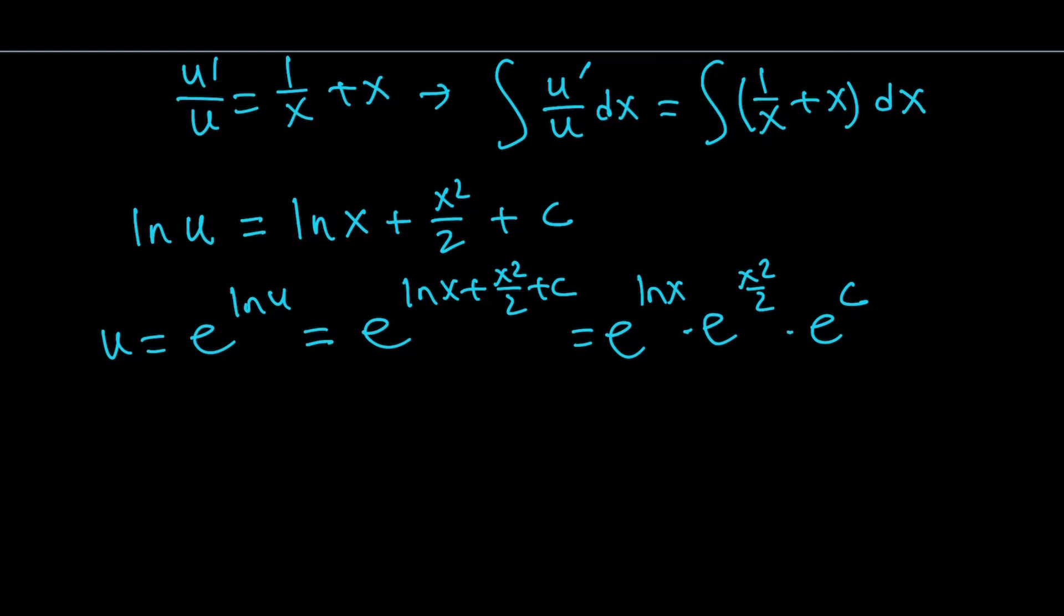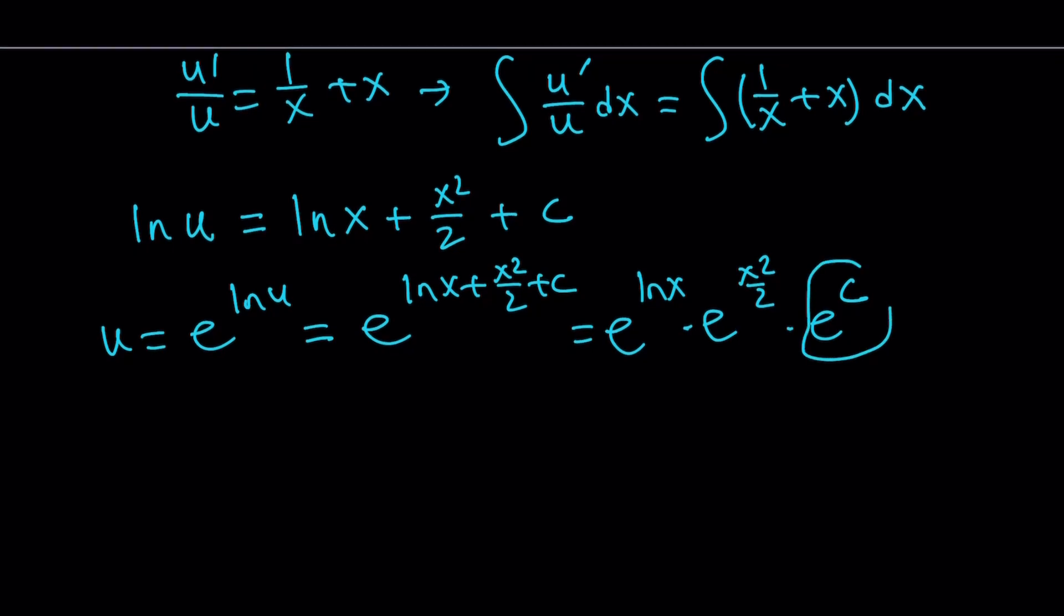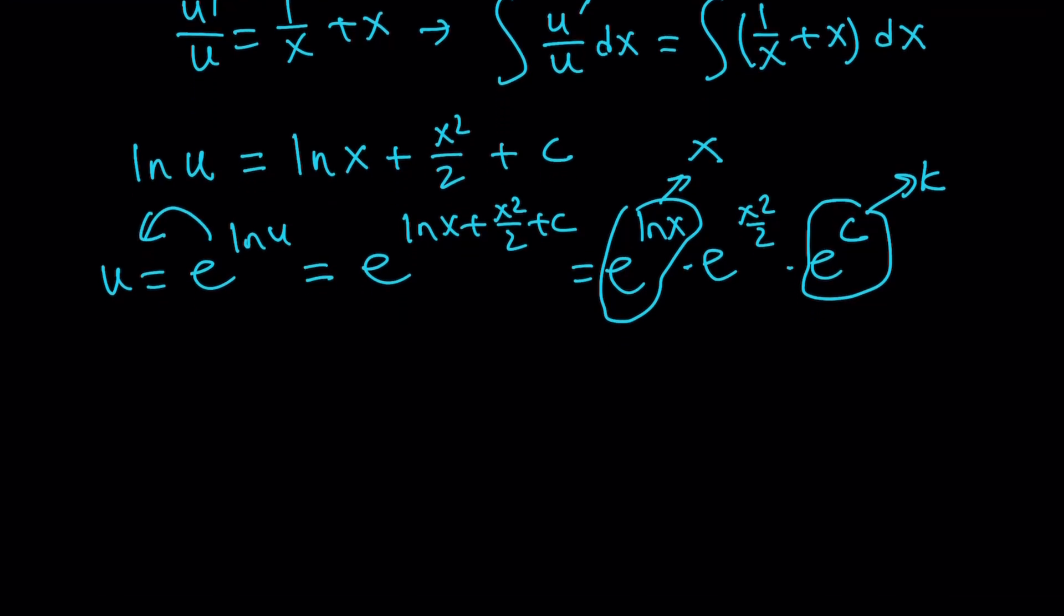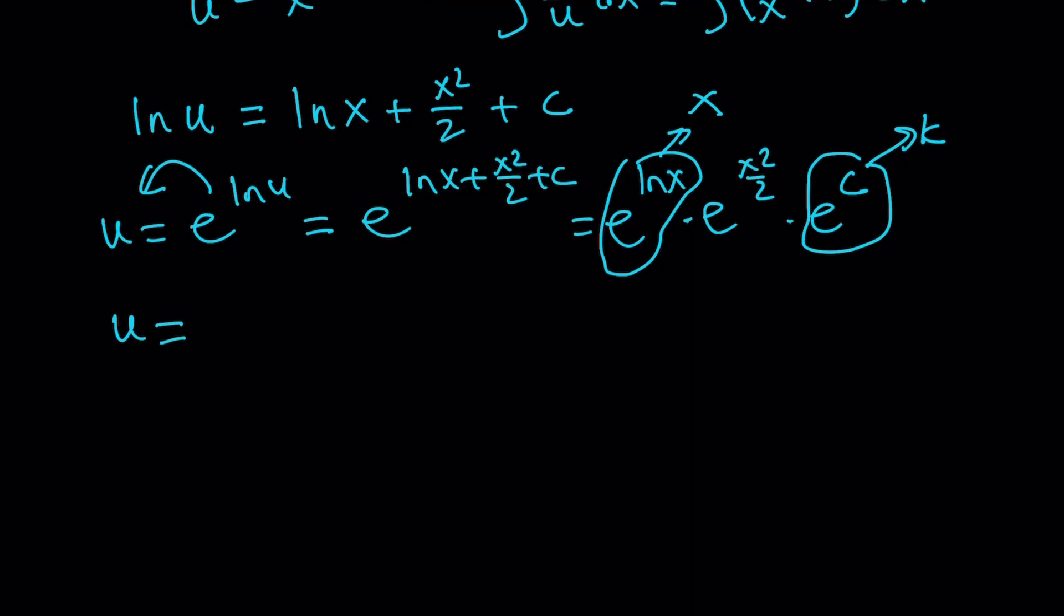But e to the power c is a constant. Come on. We can call that k. And then e to the power ln x is the same thing as x, right? You probably know that because e to the power ln u is always u. So we get the following for u. u becomes k times x times e to the power x squared over two.